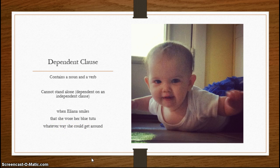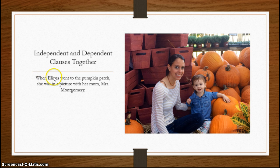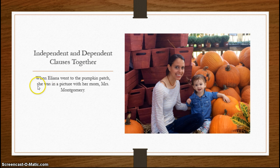'Whatever way she could get around' — again, noun, verb, but no complete thought. It has to have an independent clause to lean on. So this is what it looks like when they work together: 'When Eliana went to the pumpkin patch, she was in a picture with her mom, Mrs. Montgomery.' I have a noun and verb — Eliana went — but 'when' at the beginning makes it dependent. When Eliana went to the pumpkin patch — what happened? She was in a picture with her mom. 'She' is my subject, 'was' is my verb. And we even added an appositive — a noun renaming another noun.